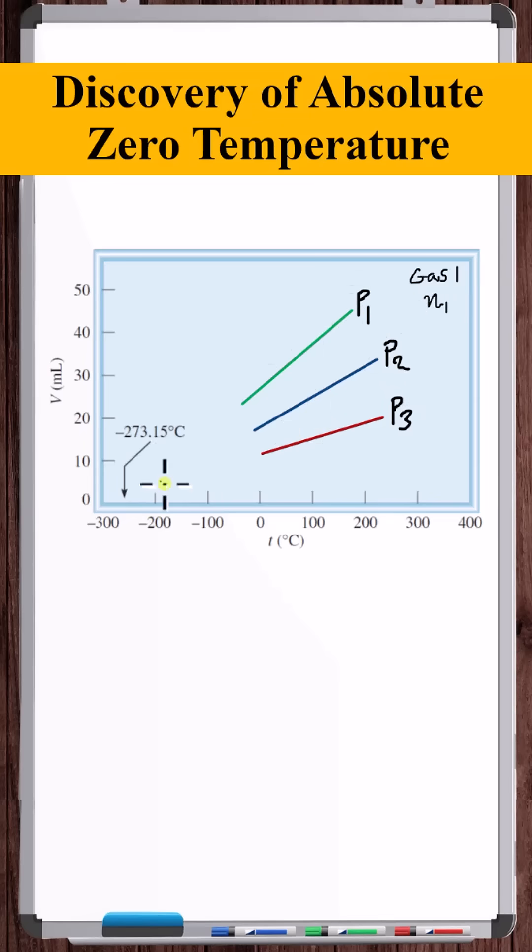But what's interesting about this graph, or with a graph for another gas, is that if we extend these lines, they all meet at a point. They meet where V is equal to zero at a temperature value of negative 273.15 degrees Celsius.